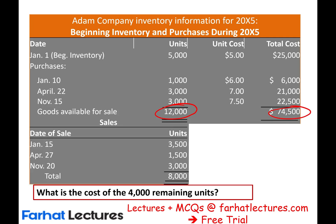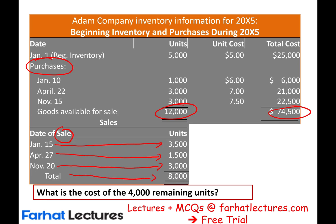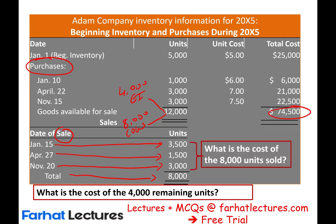Throughout the year, the company made additional sales. On January 15th, they sold 3,500 units. On April 27th, they sold 1,500 units. On November 20th, they sold 3,000 units. Notice I'm not giving selling prices because we want to focus on inventory and cost of goods sold. In total, 8,000 units were sold, which means we'll have 4,000 units in ending inventory and 8,000 units in cost of goods sold.